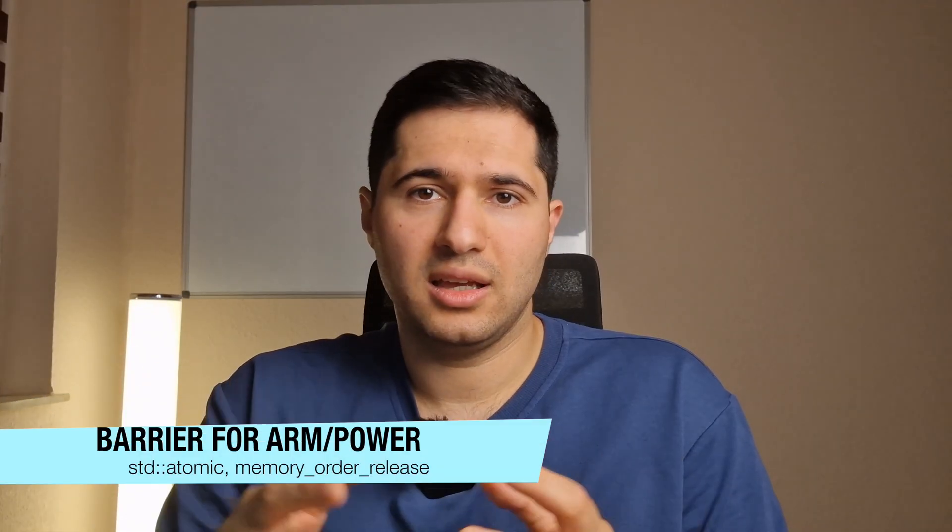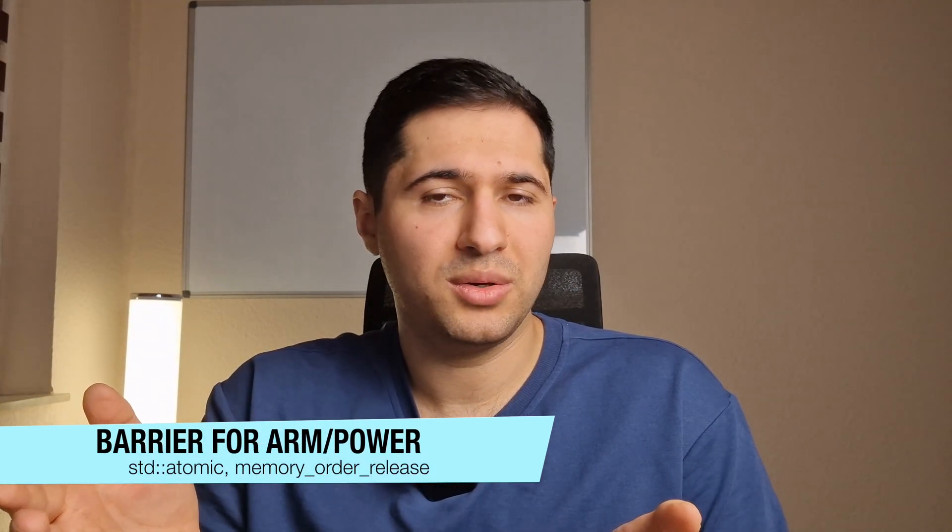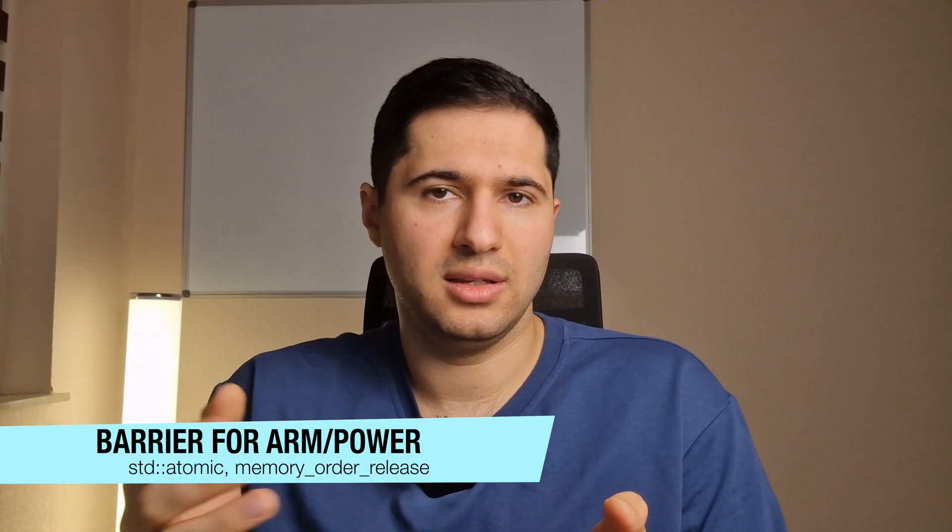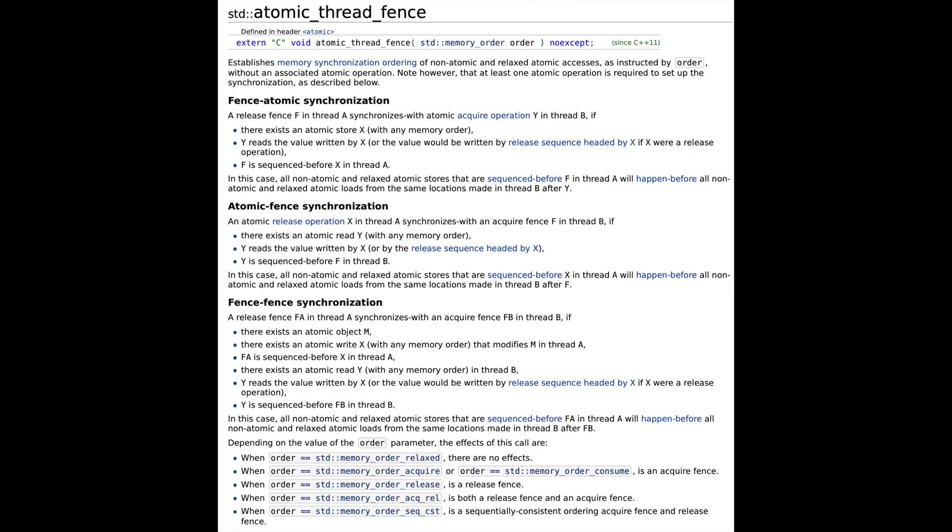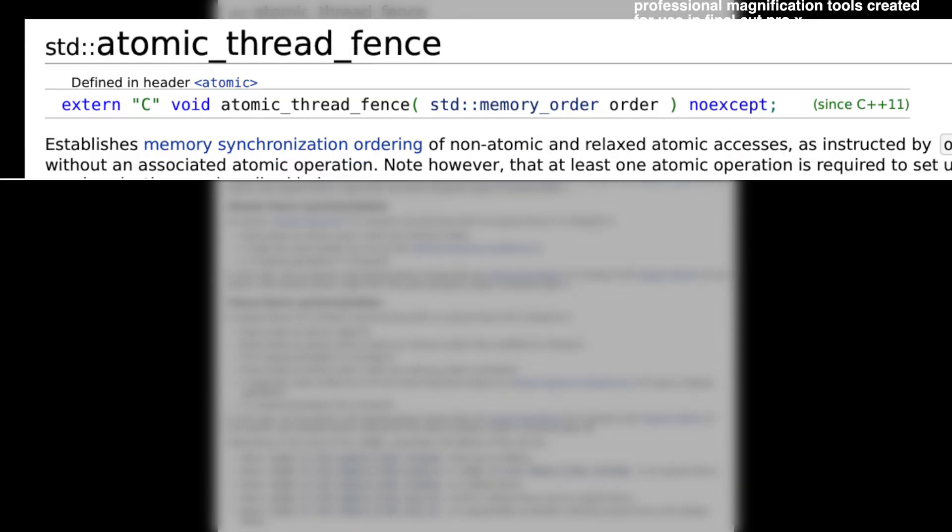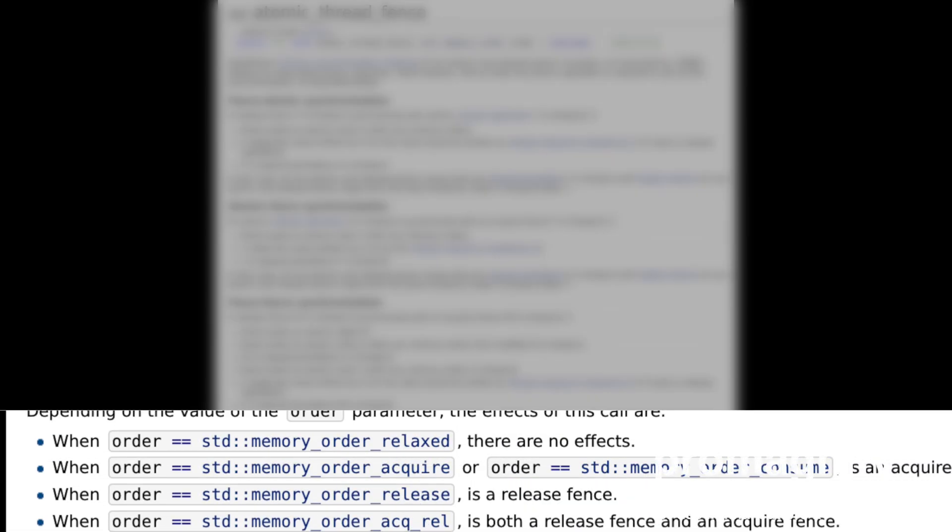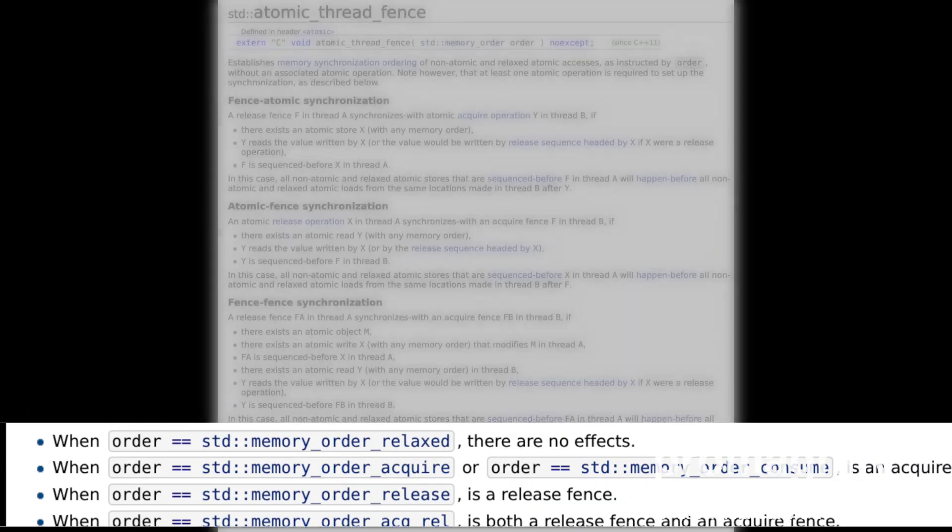On x86 CPUs, fences are strong by default, so this kind of thing just works. But on ARM or Power, you have to explicitly write barriers or use synchronized primitives like std::atomic with memory ordering flags like memory_order_release.